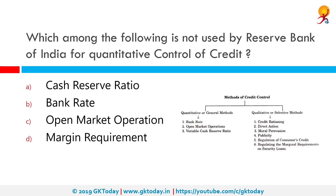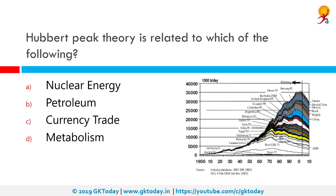Which among the following is not used by the Reserve Bank of India for quantitative control of credit? Among the given options, option D — margin requirement — is not used for this purpose. Quantitative or traditional methods of credit control include bank rate policy, open market operations, and variable reserve ratio. Qualitative or selective methods of credit control include regulation of margin requirement, credit rationing, regulation of consumer credit, and direct action.